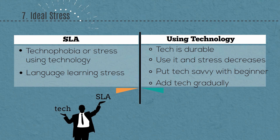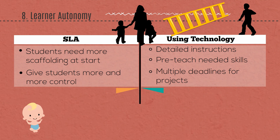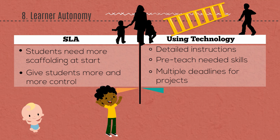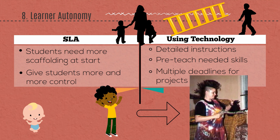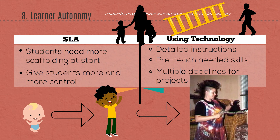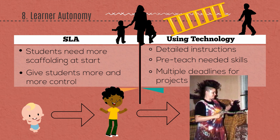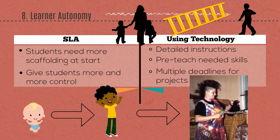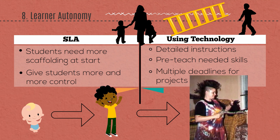You can also put advanced techies with beginners on projects and add tech gradually to the class. Lastly, learner autonomy — this is my favorite method. As teachers, we have to move our students from dependence upon us to independence or autonomy. This does not mean dropping them into a project without having already taught them the skills and language they need. You need to teach them how to be independent learners. At the beginning of the semester, provide lots of scaffolding and support. As the semester goes along, let the students have more and more control and choice — maybe by the end of the semester they're ready to do a project completely autonomously.